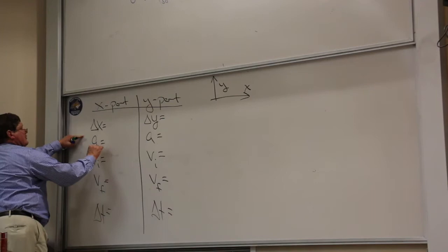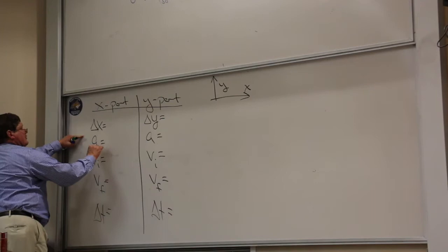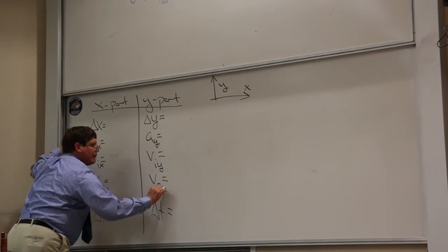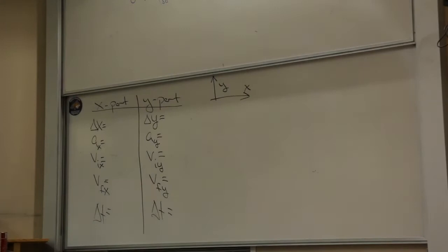With one-dimensional problems, I have a list of five variables. With two-dimensional problems, I have two lists with the same five variables — only now I use y instead of x. I have to keep straight the x part of the acceleration and the y part, the x part of the initial velocity and the y part. But time is time — it's the same in both lists, which makes these problems even easier.